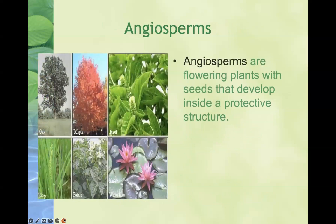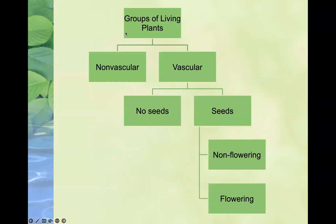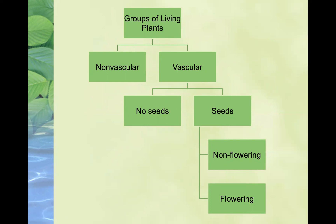Angiosperms are flowering plants with seeds that do develop inside a protective structure. Examples include maple, rice plants, and water lilies — these are all examples of our angiosperms. This organization shows the various groups and classifications of living plants based on the presence or absence of vascular tissues, the presence or absence of seeds, and whether or not seeded plants are flowering or non-flowering. You should be able to identify these characteristics and group plants accordingly.